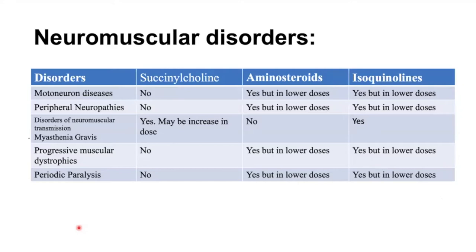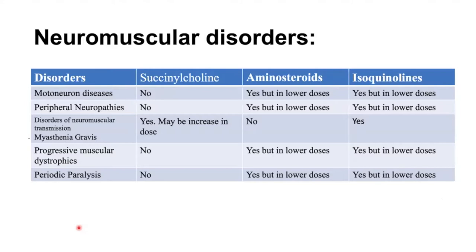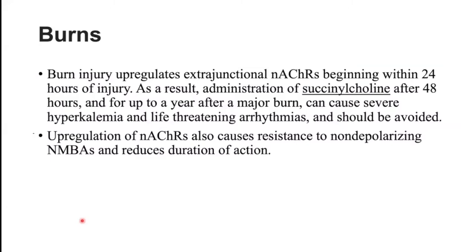In summary: for motor neurone diseases — no succinylcholine, amino steroids and isoquinolines in lower doses. Peripheral neuropathies — no succinylcholine, amino steroids and isoquinolines can be used. Myasthenia gravis — succinylcholine only, possibly in increased dose; isoquinolines like atracurium or mivacurium may also be used. Progressive muscular dystrophies and periodic paralysis — no succinylcholine. Burn injury upregulates extrajunctional nicotinic acetylcholine receptors from 24 hours post-injury; succinylcholine after 48 hours up to one year can cause severe hyperkalemia and life-threatening arrhythmias and should be avoided.